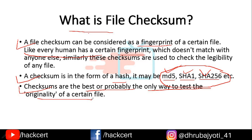Whenever you download a certain file from a website, if it is the official website, you will see that wherever the download link is present, beside that you will see MD5 or SHA1 and then a big hash will be present — that is actually the checksum. If you download the file from some other location, like an unofficial file hosting website, and you want to judge whether that file is the real file or something has been changed in the coding, then you can judge that by determining the checksum and double-checking it with the original checksum available on the official website.